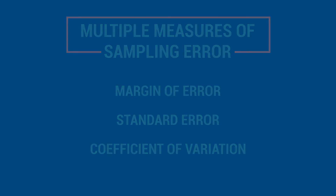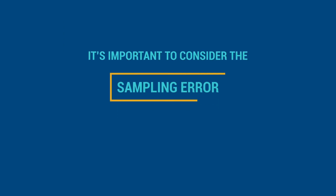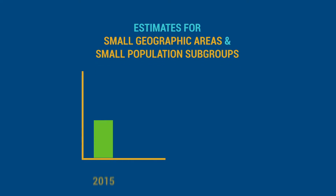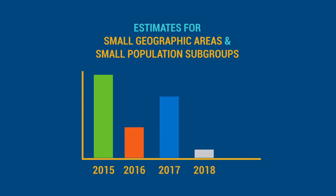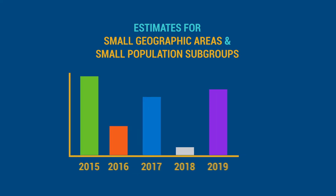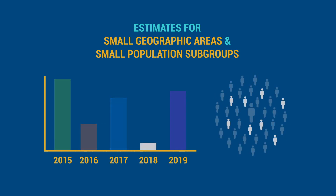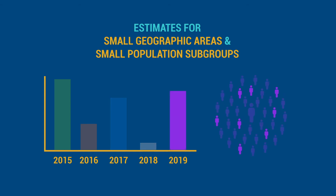For comparisons based on ACS data, it's important to consider the sampling error associated with each estimate to make sure the observed difference between estimates represents a true difference that exists within the full population. For example, estimates for small geographic areas or small population subgroups may fluctuate dramatically from year to year, even when there's no meaningful change or difference. Because the sample changes each year, the number may only reflect that a different sample was pulled. To compare data from year to year, the sampling error must be considered.